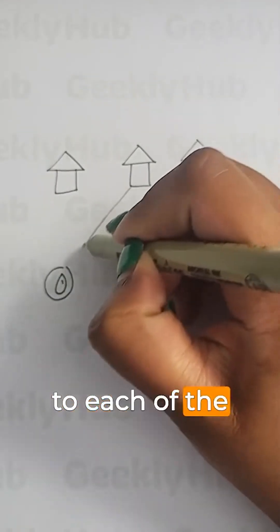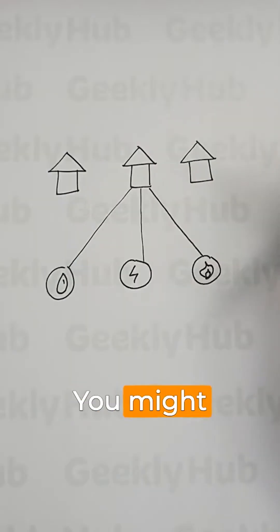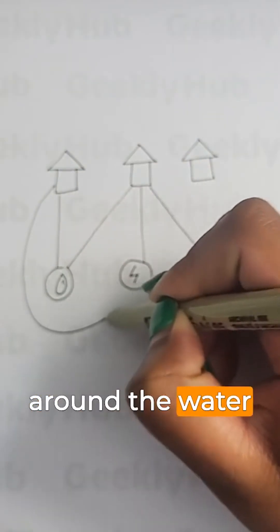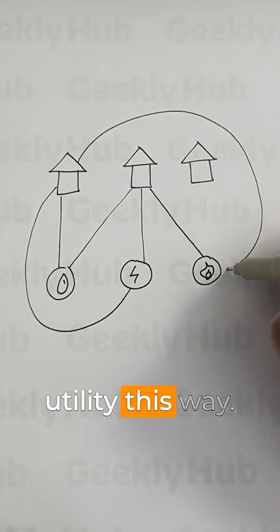You might start by connecting the middle house to each of the utilities, and that's pretty easy. You might move to the left house then and connect it to each of the utilities. We can go around the water utility this way, and then around to the gas utility this way.